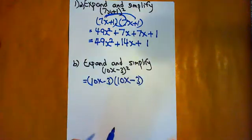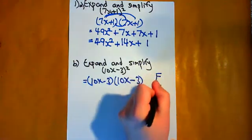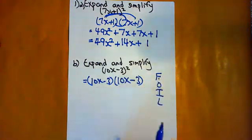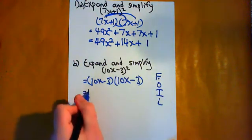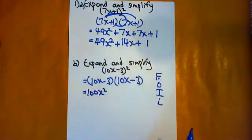So another way we can look at this is FOIL. What does FOIL mean? FOIL means First, so the first two terms in each bracket, which is 10x times 10x, which is 100x². So that was F for First.